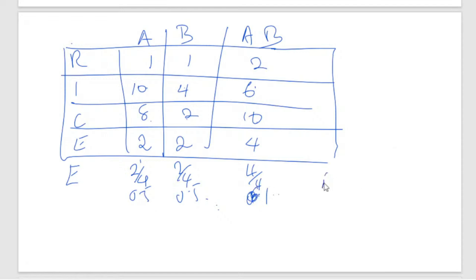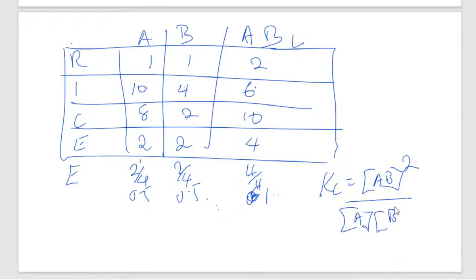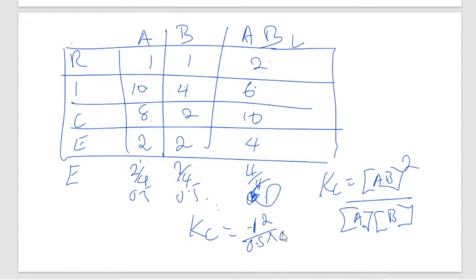Now Kc equals the concentration of AB squared over the concentration of A times the concentration of B. So Kc = (1)² / (0.5 × 0.5) = 1 / 0.25 = 4. So Kc equals 4. That's what you were supposed to do for that calculation.